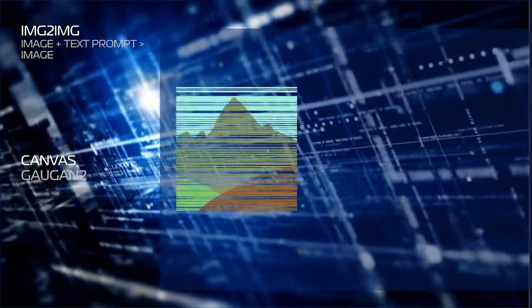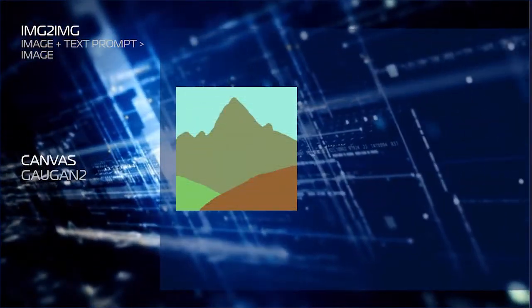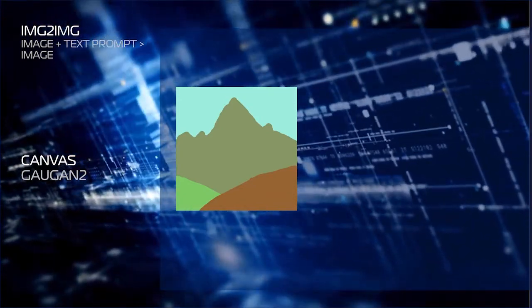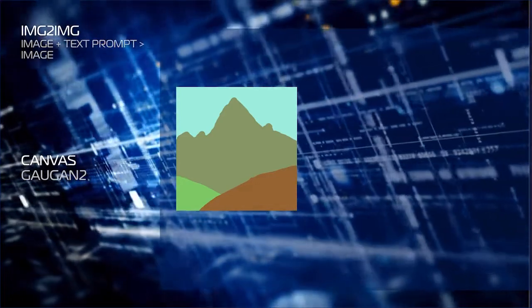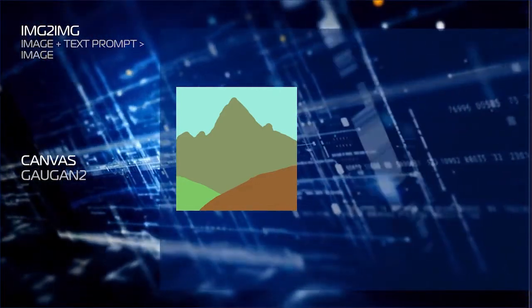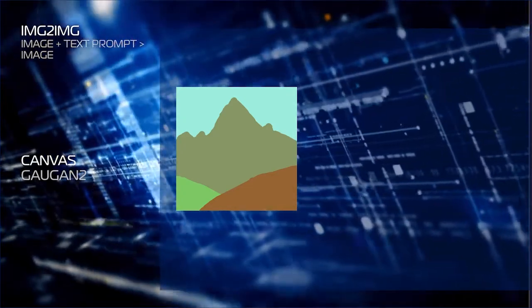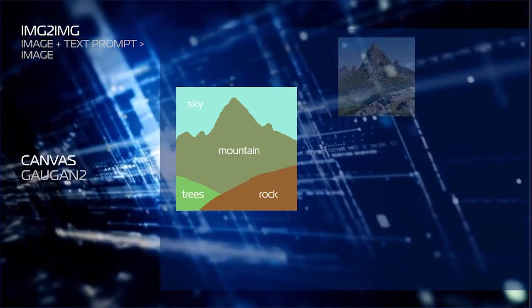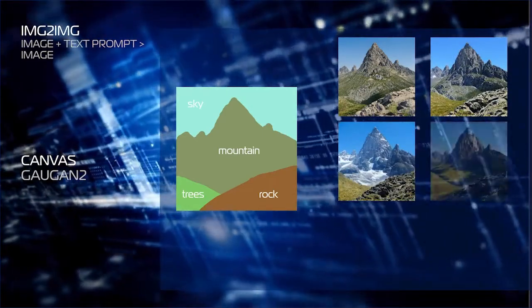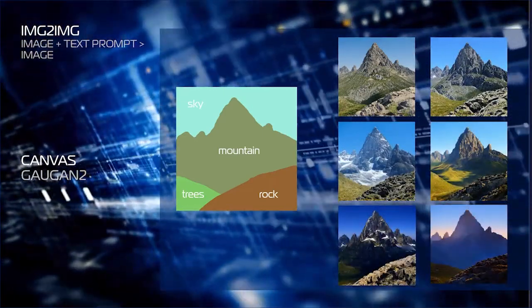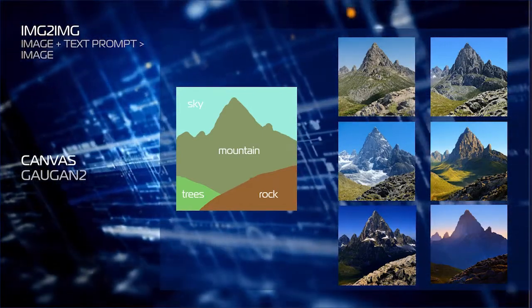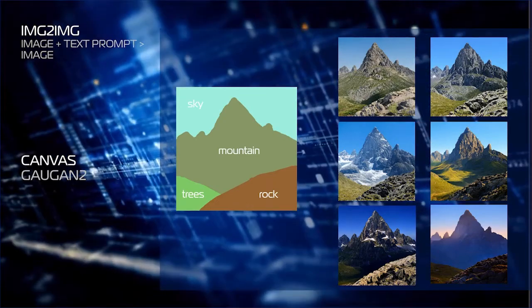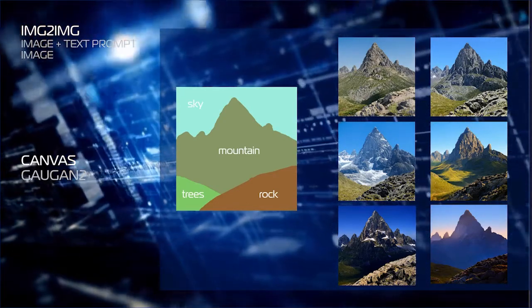Another form of image to image can be seen using the NVIDIA Canvas app and the associated web app, GalGAN2. Here's my basic drawing in the GalGAN or Canvas application. The software provides labels for each color — dull green is mountain, green is trees, teal is sky, and brown is rock. Canvas then generates images based on these image prompts. I can add text or even my own styles to the image platform, and nearly infinite variations can be generated.